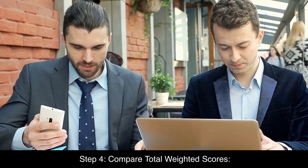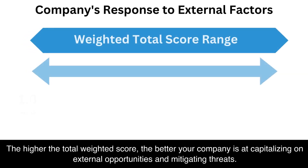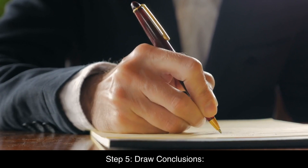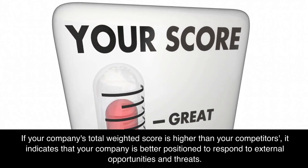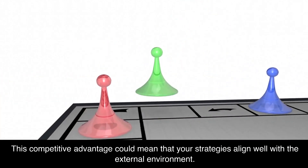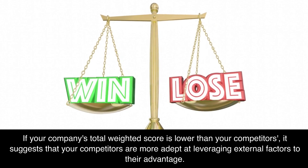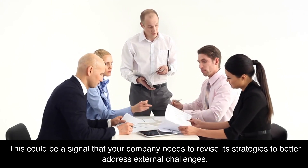Step 4: Compare total weighted scores. Compare the total weighted score of your company with those of your competitors. The higher the total weighted score, the better your company is at capitalizing on external opportunities and mitigating threats. If your company's total weighted score is higher than your competitors', it indicates that your company is better positioned to respond to external opportunities and threats, suggesting your strategies align well with the external environment. If your company's total weighted score is lower, it suggests that your competitors are more adept at leveraging external factors to their advantage, and your company may need to revise its strategies to better address external challenges.